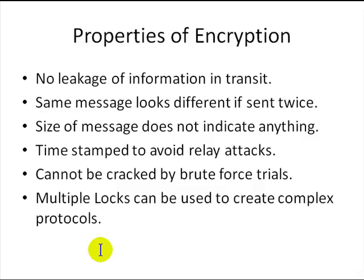What are the properties of good encryption? When sending data there should be no leakage of information in transit — people shouldn't be able to figure out anything about a message by looking at the locked data. Also, if you send the same message twice it should not look the same. For example, if you send 'transfer hundred dollars' today and the same message tomorrow, it should look completely different, so an attacker can't replay your message to the bank and collect money a second time.